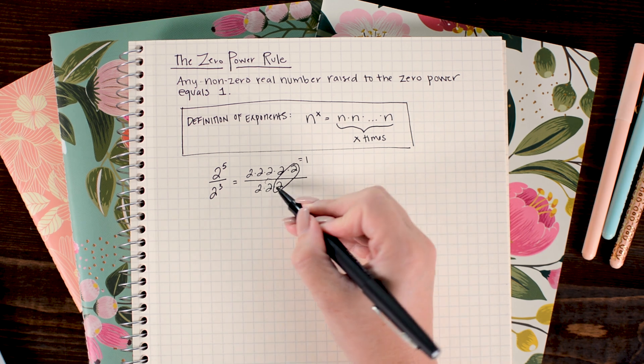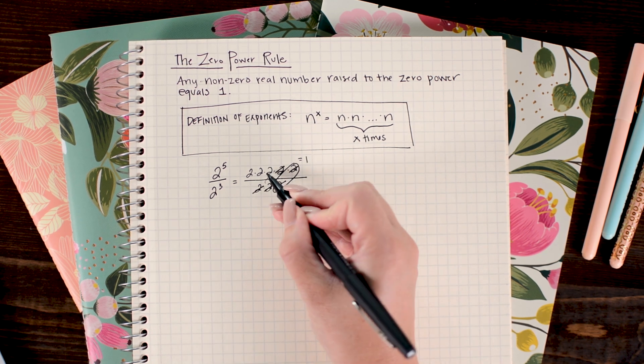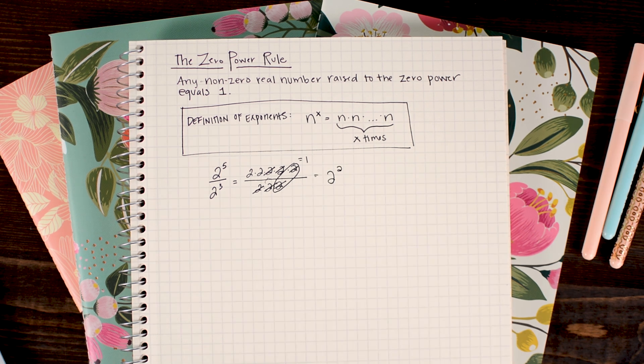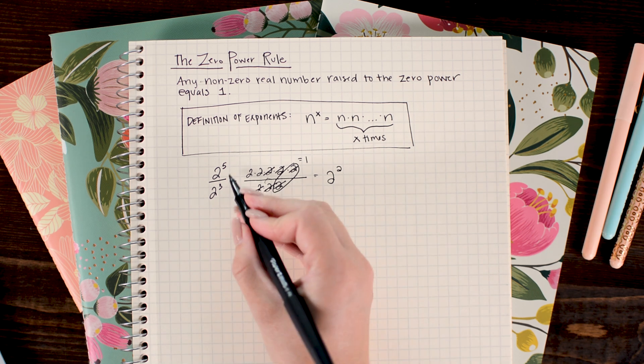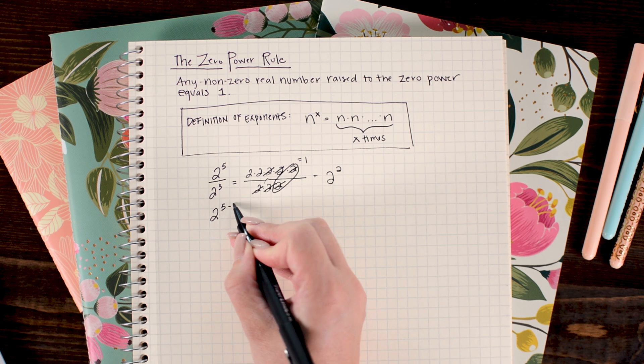And now each 2 divided by 2 pair can divide to 1. So I'm going to go ahead and just cancel out all the 2 divided by 2 pairs I can find, and I'm left with 2 squared. This should all be kind of review for you. Of course, I could take the shortcut and just subtract the exponents here, so I'd have 2 to the fifth minus 3.